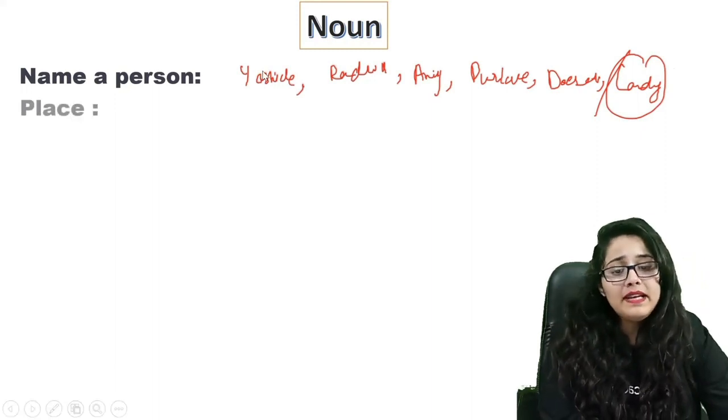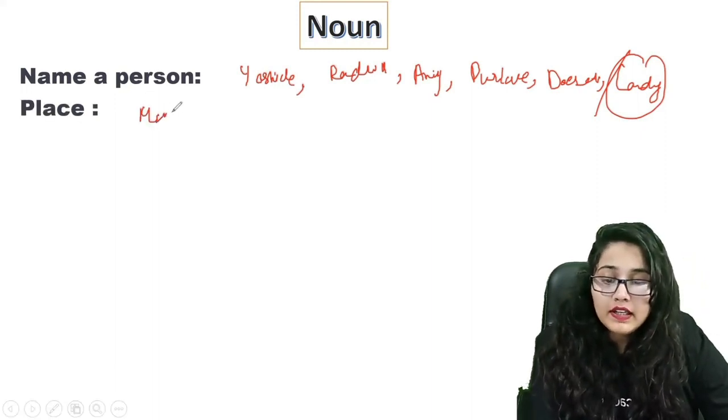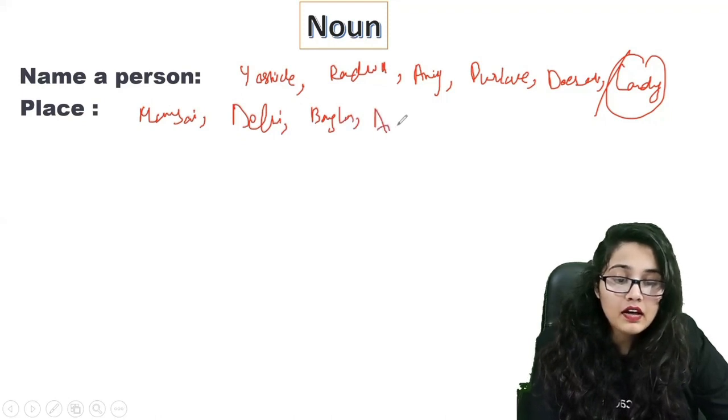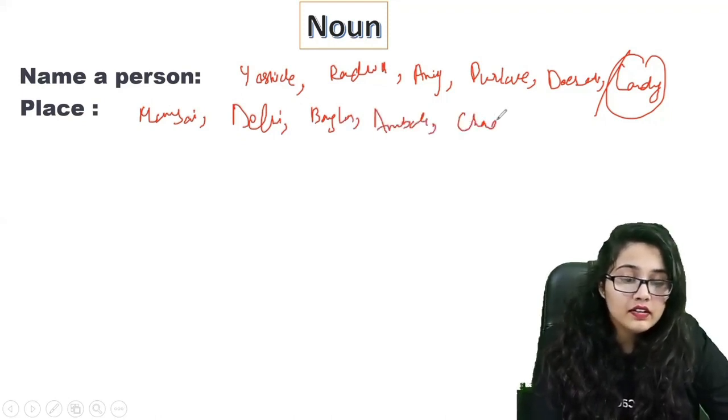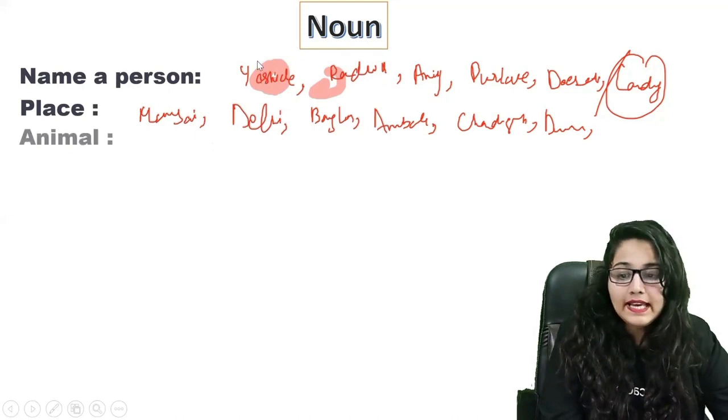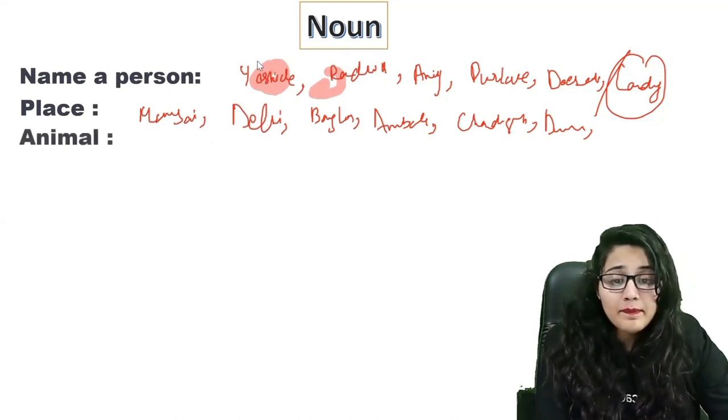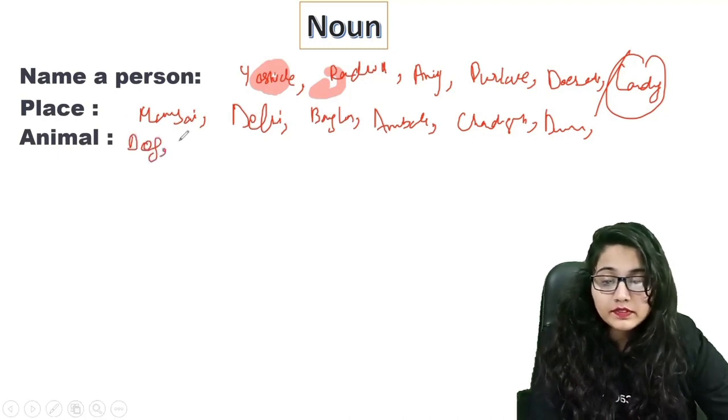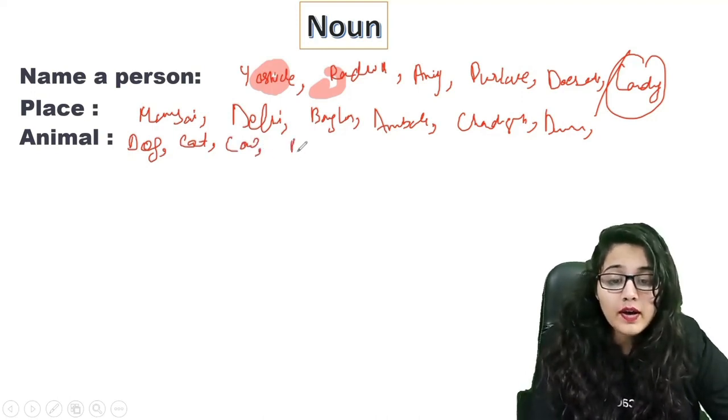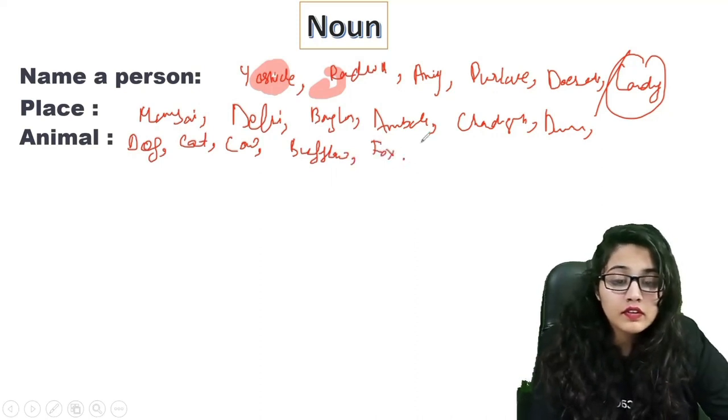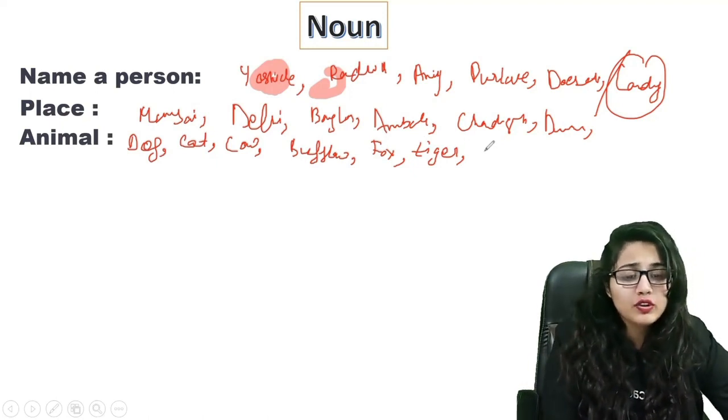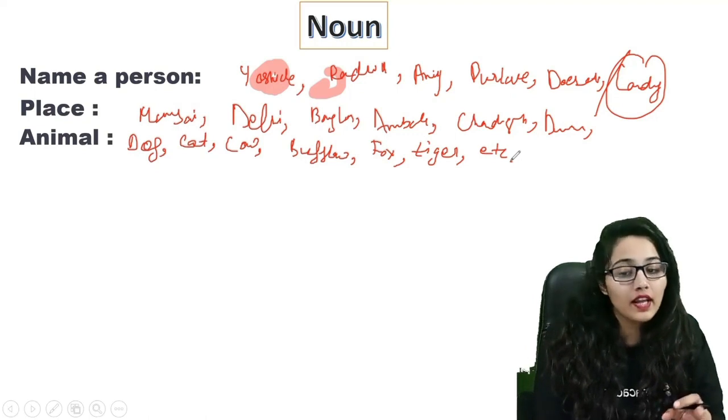Next is place. Place is also our noun. What is Mumbai, Delhi, Bangalore, Ambala, Chandigarh, Dubai? These are all the things that come in places. What about animals? Dog, cat, cow, buffalo, fox, tiger, etc. All these animals will come in the animal category.